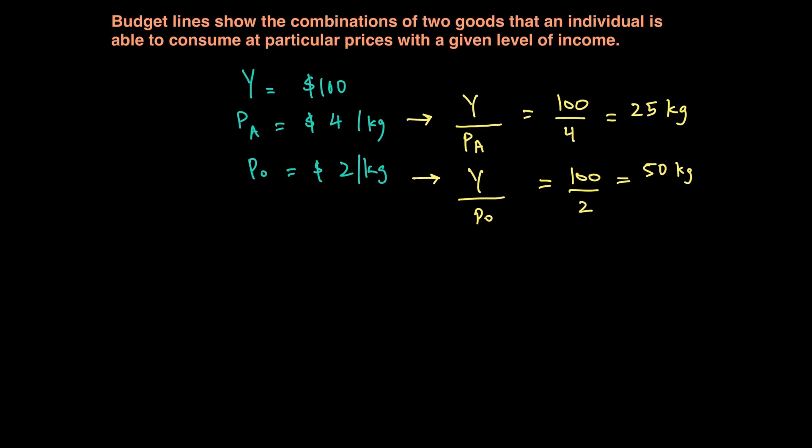We can now plot this information on a graph because we know two combinations: 25 apples with no oranges and 50 oranges with no apples. If I put apples on my Y axis and oranges on my X axis, I will have a linear line where one point is 25 and another point is 50. These are not the only two combinations; there could be some combination in the middle as well.